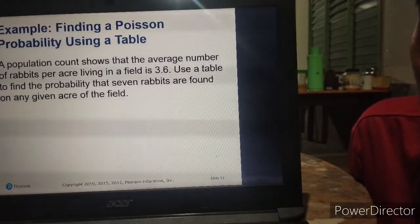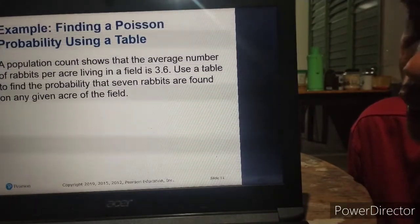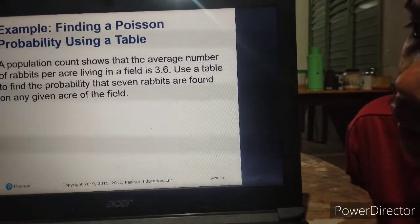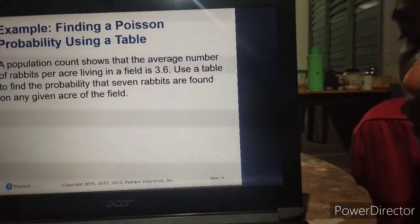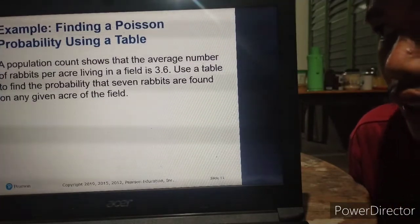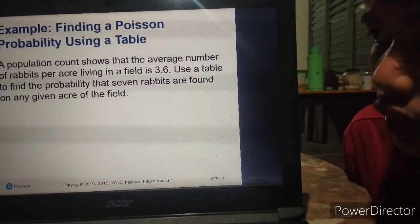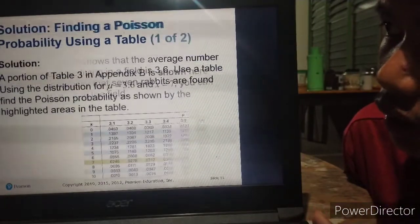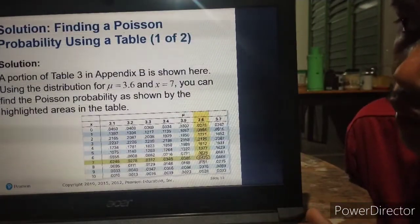Let's have another example using a table. Population count shows that the average number of rabbits per acre living in a field is 3.6. Use a table to find the probability that seven rabbits are found on any given acre of the field.